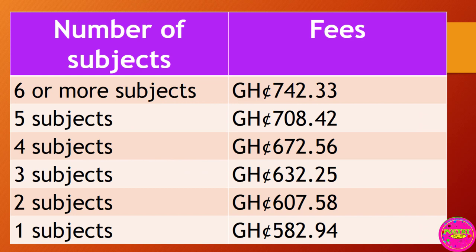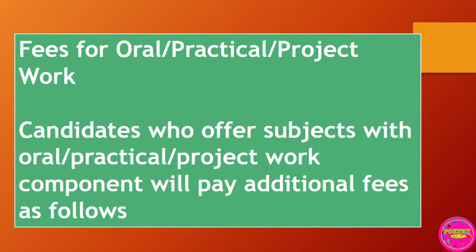Number of subjects and fees required to be paid: six or more subjects — GH¢742.33; five subjects — GH¢708.42; four subjects — GH¢672.56; three subjects — GH¢632.25; two subjects — GH¢607.58; one subject — GH¢582.94.